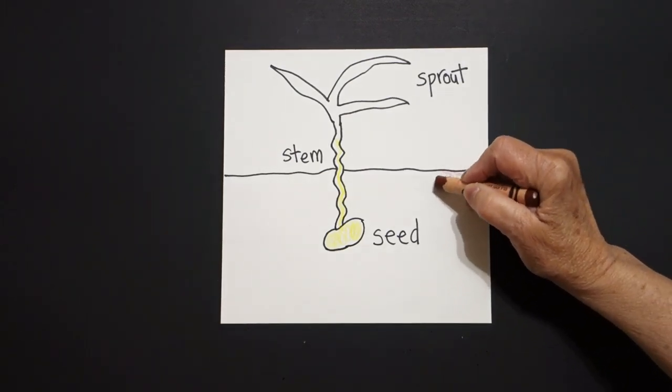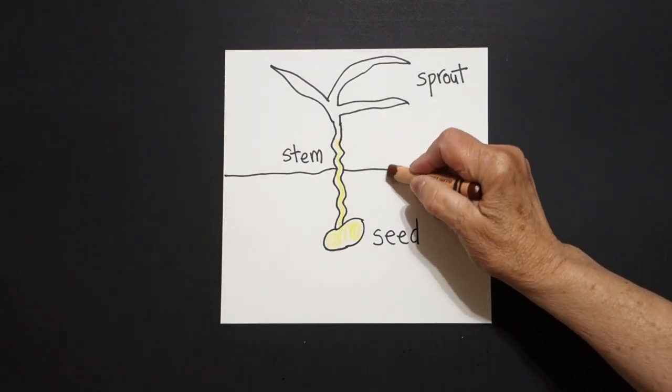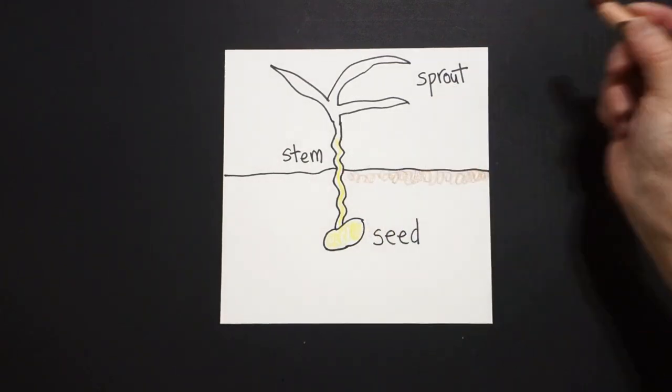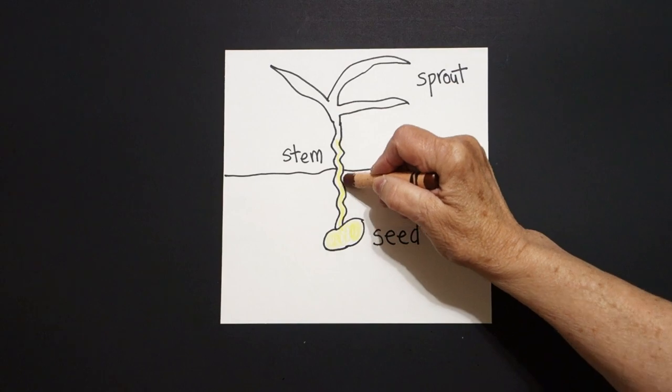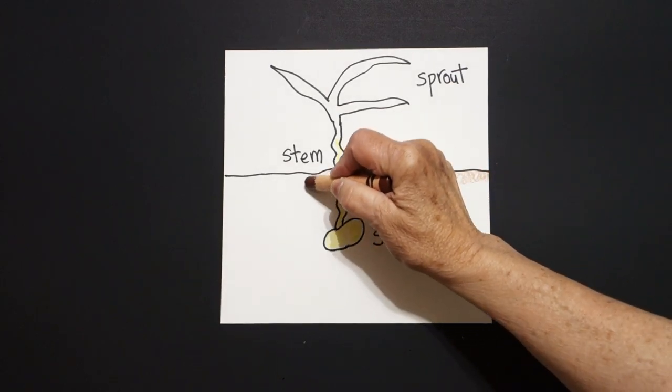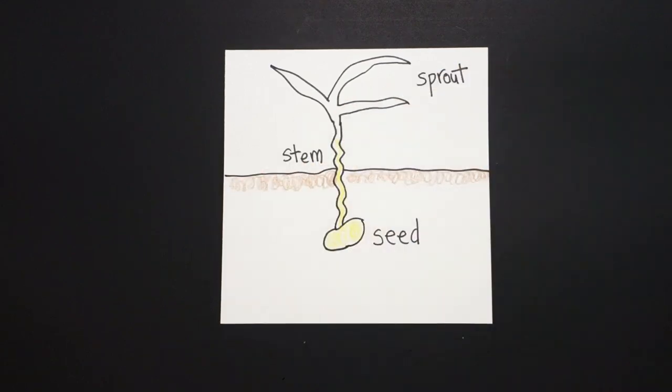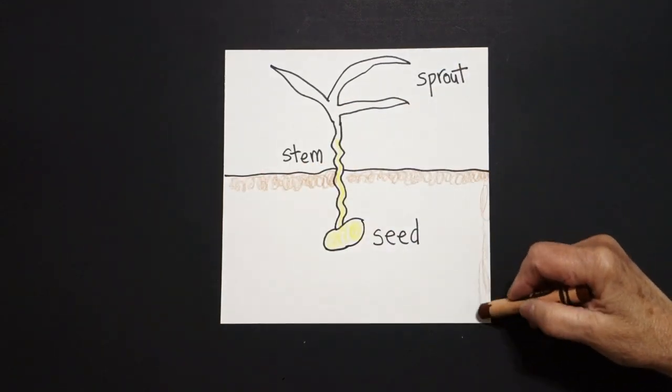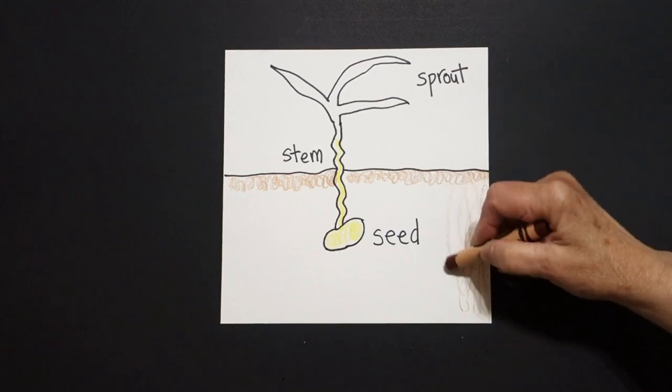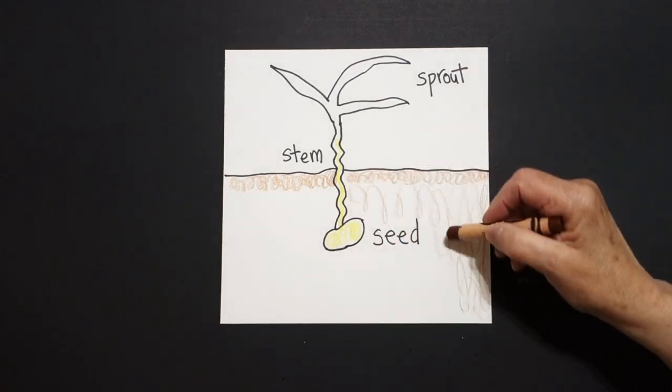I'm going to take my brown and I'm going to color the bottom part brown with the loop-de-loop. Jump over, bottom part brown because that is underground. Now I'm just going to put some brown around the bottom part.